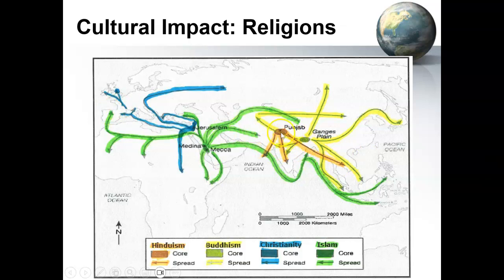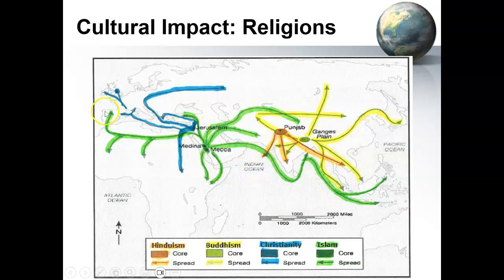Hinduism, the earliest of these and the only ethnic religion, spreads into Southeast Asia because of migration. The reason is that this is the very beginning of the development of Indian Ocean trade, and Southeast Asia becomes a crucial part of that. Buddhism plugs into the very beginning of the Silk Roads, using that as a conduit for its diffusion. In the case of Christianity, it's the Mediterranean trade routes. Once it spreads west — particularly with St. Paul — it plugs into that network and spreads throughout the Mediterranean and all the way into Russia.